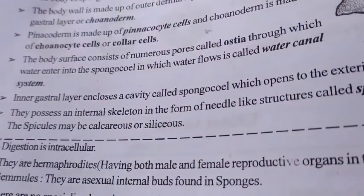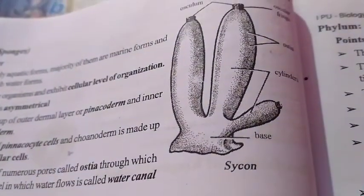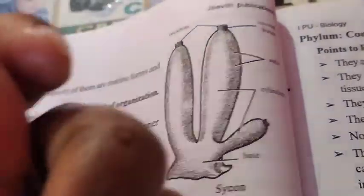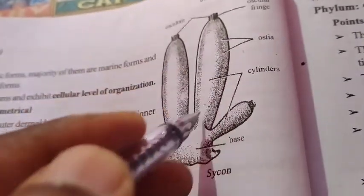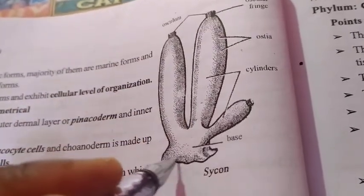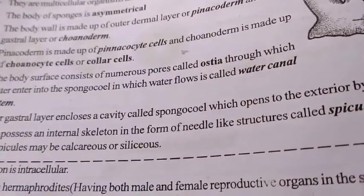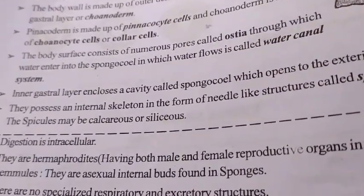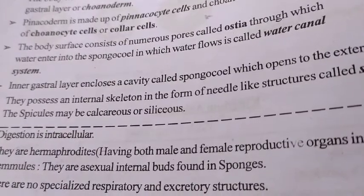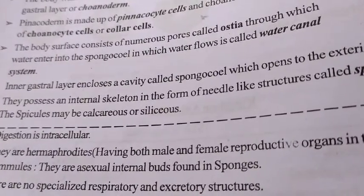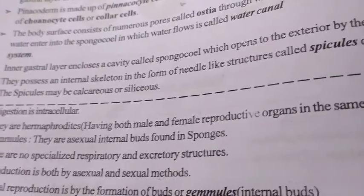The body surface consists of numerous pores called ostia. They contain numerous pores through which water enters into the sponge. The canal in which water flows is called the water canal system.